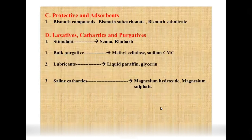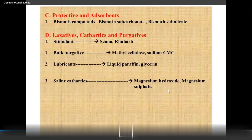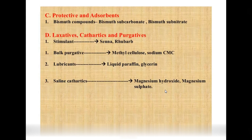Protective and absorbent agents include bismuth compounds: bismuth subcarbonate and bismuth subnitrate. Cathartics and laxatives include stimulant cathartics (senna, rhubarb), bulk purgatives (methyl cellulose, sodium CMC), lubricants (liquid paraffin, glycerin), and saline cathartics (magnesium hydroxide and magnesium sulfate), which can also relieve constipation.